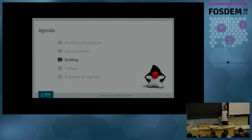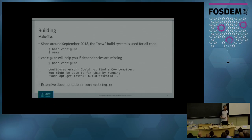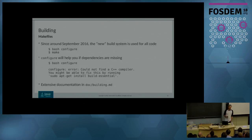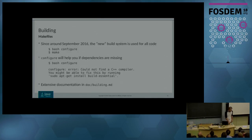Once you have the source code, you want to build it. Since around September 2016, the new build system has been in place and is used for all the code. Nowadays you just type ./configure and then make and you will build the product. Configure is very helpful if you're missing something — for example, if I removed the C++ compiler from my Debian system, it tells me it could not find a suitable C++ compiler, and since it knows I'm running Debian, it suggests I install the build-essential package. The documentation has been greatly improved and is now in a Markdown file in the doc directory of the OpenJDK repository.